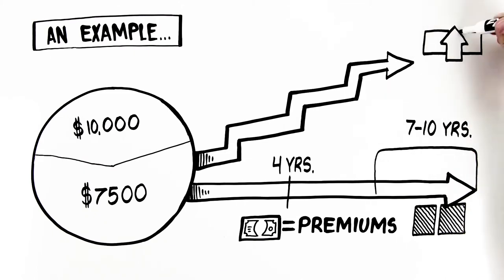So in this example, in year 8, you'll have paid $80,000 in premiums and have slightly more than $80,000 in cash value.